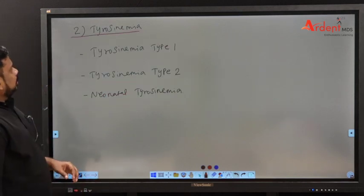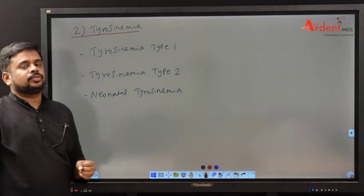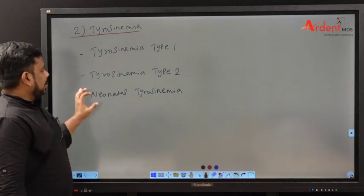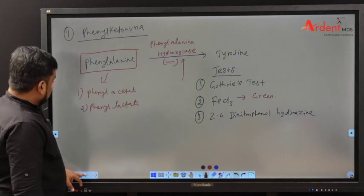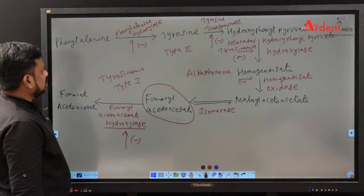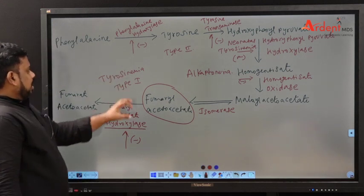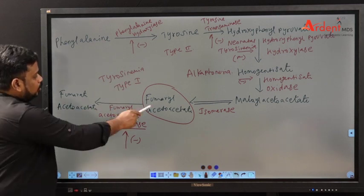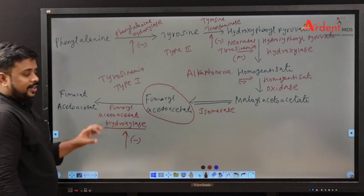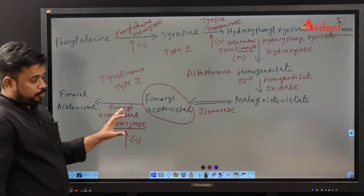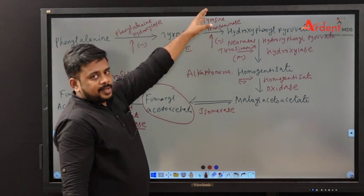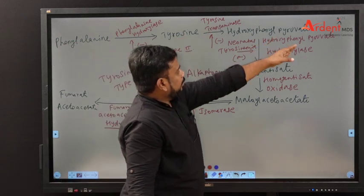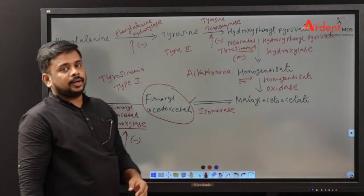Coming to tyrosinemia — there are three types. Tyrosinemia type 1 is caused by a defect in fumarylacetoacetate hydroxylase, the last enzyme in aromatic amino acid metabolism. Tyrosinemia type 2 is caused by a defect in tyrosine transaminase. A defect in hydroxyphenylpyruvate hydroxylase leads to neonatal tyrosinemia.